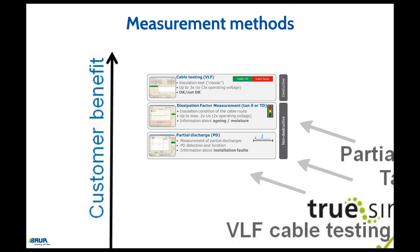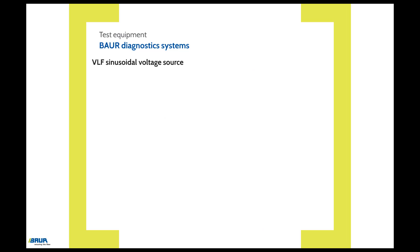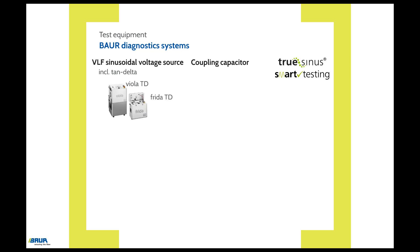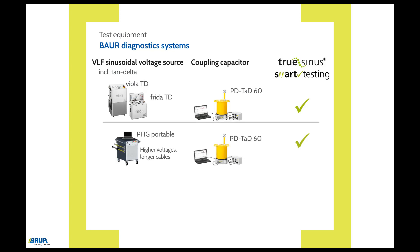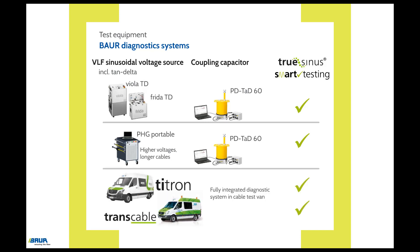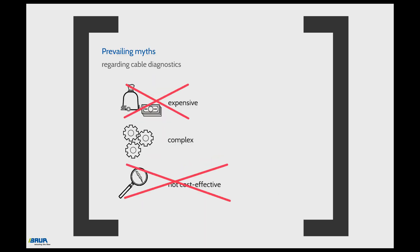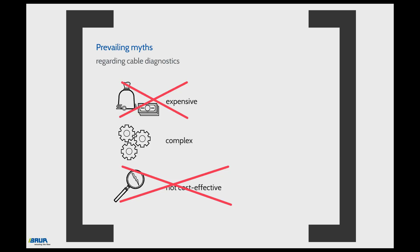Baur diagnostic systems include a VLF sinusoidal voltage source with integrated TAN-delta function, a coupling capacitor for partial discharge testing, and Baur VLF true sinus technology. These systems range from smaller variants such as the Frida TD or Viola TD with PDTAD60 coupling capacitor and a PC for controlling the system, through alternative VLF voltage sources such as the PHG for higher voltages and longer cables, to fully integrated diagnostics in the cable test vans TITRON or TransCable. Today's diagnostic systems are already very compact, handy, flexible, and user-friendly, offering a high level of significance for various application cases.